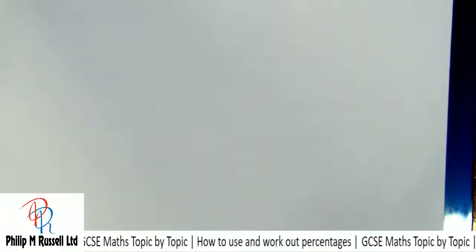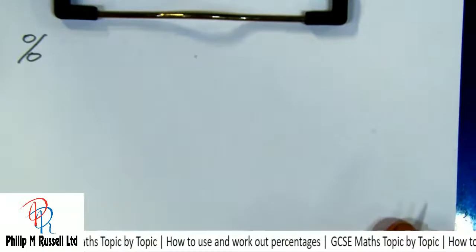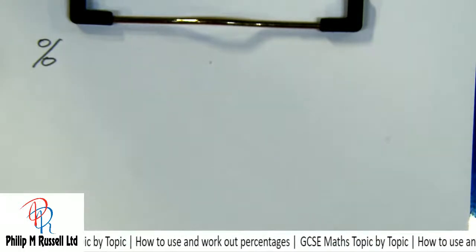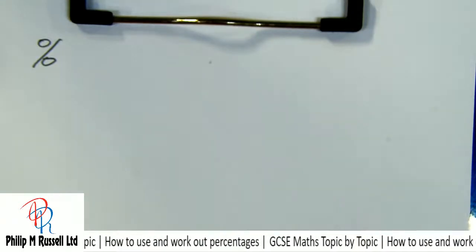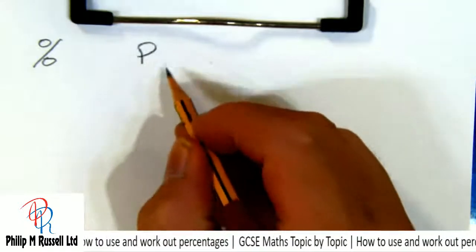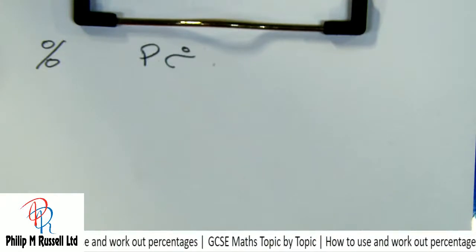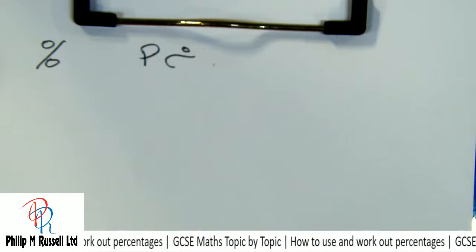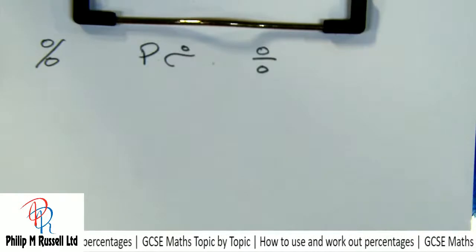No one really knows where this particular percentage symbol came from, but what we do know is it's been around for an awful long time. Some form of it we've seen written perhaps as 'percento.' The exact origin is really obscure, but it's been around since about 1425.